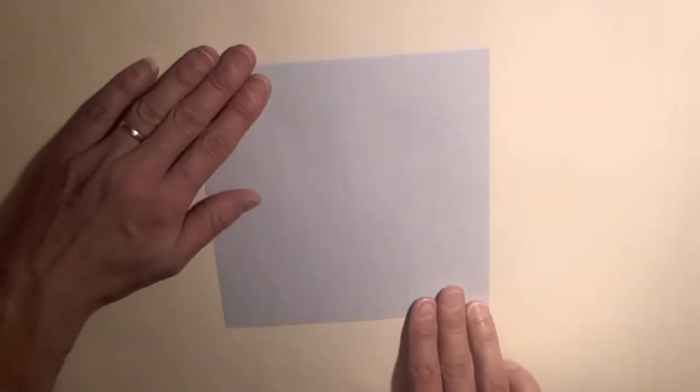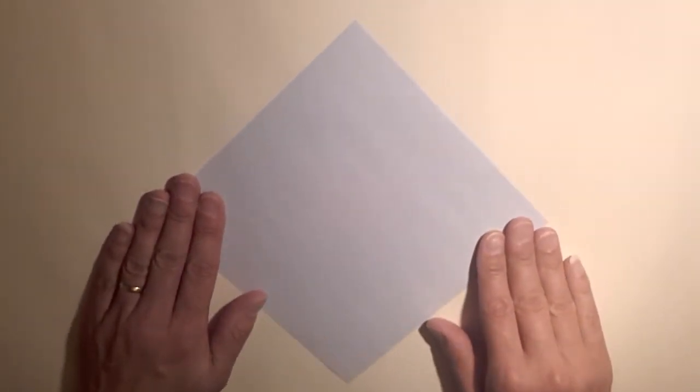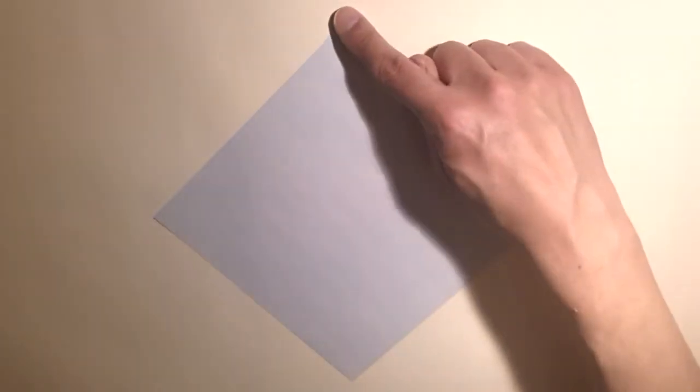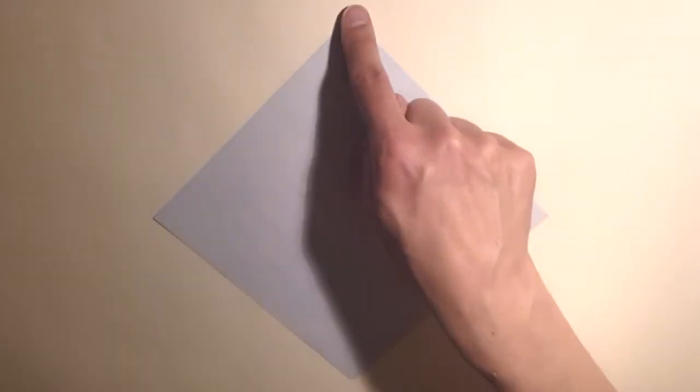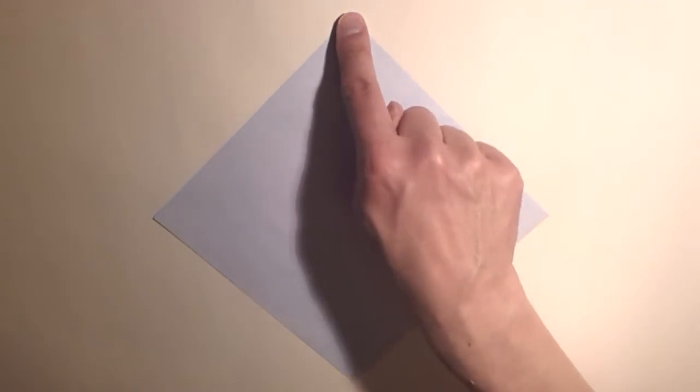We're going to rotate our paper so we have a corner at the top and a corner at the bottom. And we're going to make a valley fold running from the top corner down to the bottom corner. So we're going to fold this corner here on the left side so it coincides with the corner on the right.